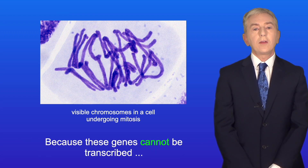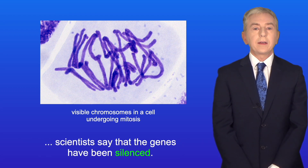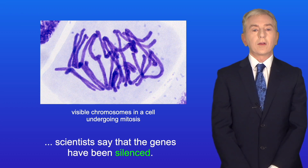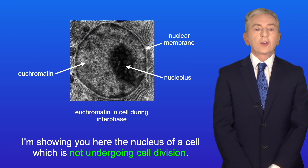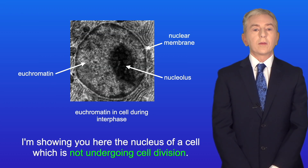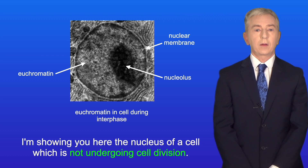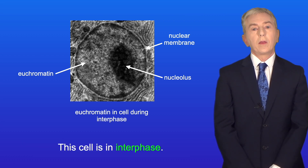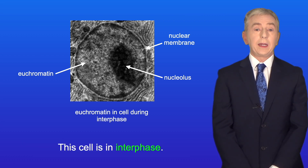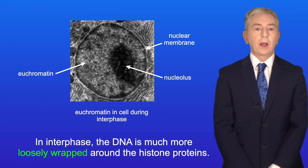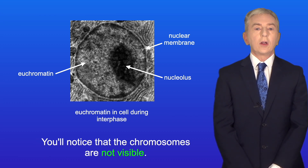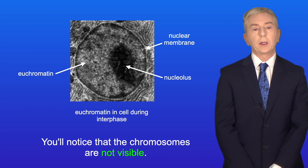Because these genes cannot be transcribed, scientists say that the genes have been silenced. I'm showing you here the nucleus of a cell which is not undergoing cell division — this cell is in interphase. In interphase the DNA is much more loosely wrapped around the histone proteins, and you'll notice that the chromosomes are not visible.